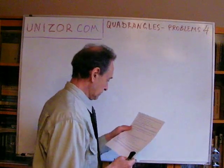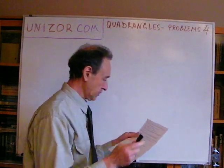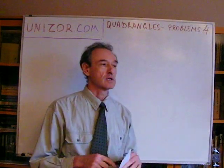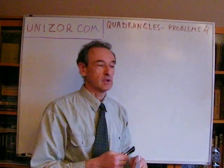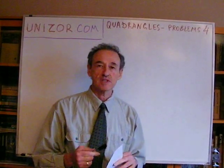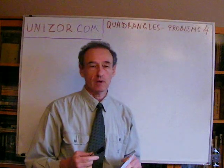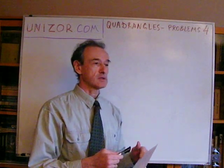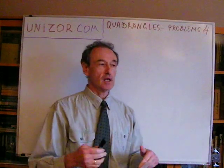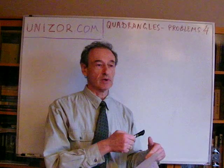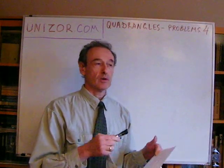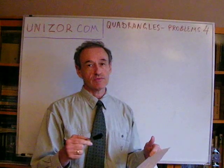All right, locus. So a couple of problems about locus. What is a locus? Locus is, in geometry at least, a set of points which satisfy certain criteria. So if I'm asking what is the locus of points that satisfy certain criteria, it means that you have to find some kind of a line, curve, or area on the plane, all points of which satisfy this criteria.